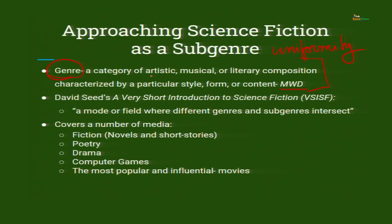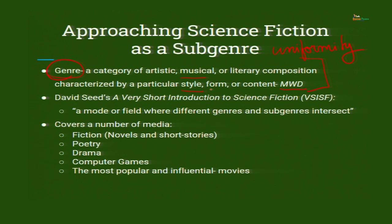If we sum it all up, whatever art or music is created, when it belongs to a particular style — for example, some music you call classical, some pop, some rock because they all have different kinds of musical expression — you fix a kind of genre for that particular item of art, musical, or literary composition. They have a particular style, a particular form, and the content is also very important. So, in the case of science fiction, how do we understand a genre?